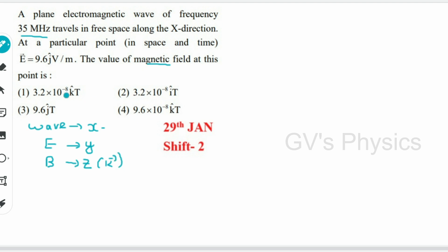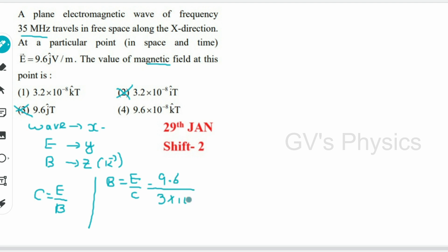So k̂ direction means the answer is option 1 or 4; options 2 and 3 are eliminated. The wave is in free space (vacuum), so we use c = E/B, giving B = E/c = 9.6 / (3 × 10⁸) = 3.2 × 10⁻⁸ T, along the z axis (k̂). Option 1 is the right answer.